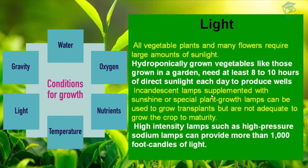Now we will study about light. As we all know, light is very much necessary for photosynthesis. All vegetable plants and many flowers require large amounts of sunlight. Hydroponically grown vegetables, like those grown in a garden, need at least 8 to 10 hours of direct sunlight each day to produce well. Incandescent lamps are an artificial source of light supplemented with sunshine or special plant growth lamps, but they cannot grow a plant to maturity.